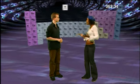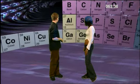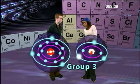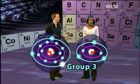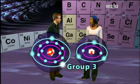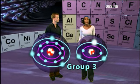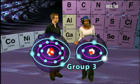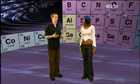And how about group three? The group three elements have atoms with three electrons in their outer shells. And the atoms in group four have four electrons in their outer shells, and so on with the rest of the groups.